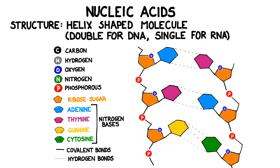In the DNA molecule, all of these components are arranged in a shape that resembles a twisted ladder. Notice how the sides of the ladder alternate between ribose sugar groups and phosphate groups. Also notice how adenine always pairs with thymine and guanine always pairs with cytosine. The nitrogen bases are connected across the molecule using hydrogen bonds.